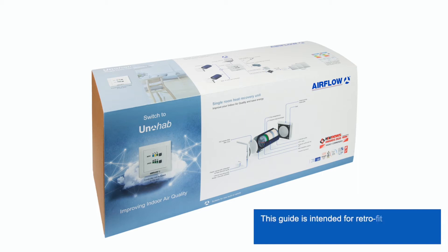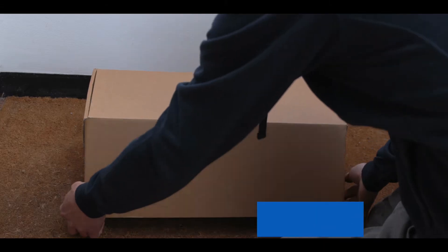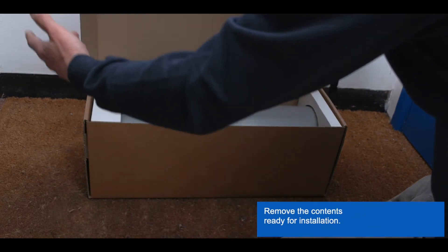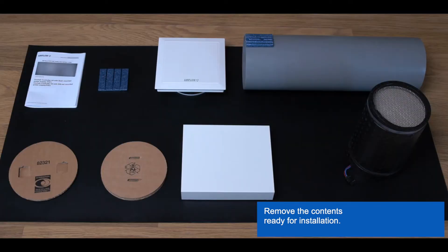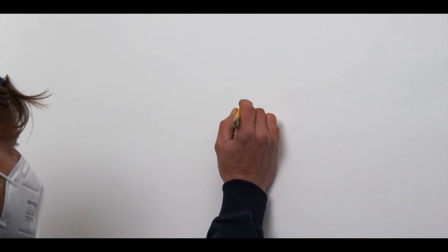This guide is intended for retrofit cavity wall installation. Here's what you'll find in the unahab box. Remove all the contents ready for installation. Make sure you read the instruction manual for installation. Mark a center hole ready for drilling the core hole.